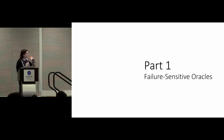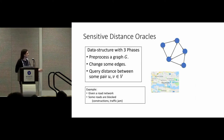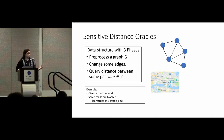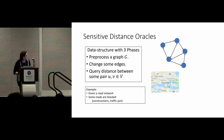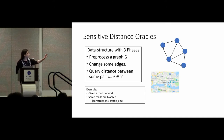So first, what are failure-sensitive oracles? Let me define this model. This is a data structure problem where we have three phases. First, we are given some graph and the data structure is allowed to preprocess it. At the top we see a graph. We are allowed to preprocess it, and if you want a less abstract example, you can think of the road network below.